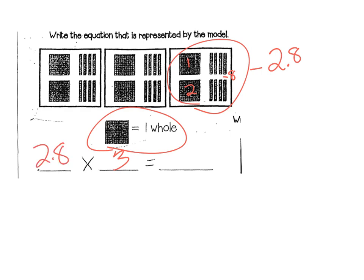I think it is safe to say that one of my pictures represents two and eight tenths. So I can write that as two and eight tenths times three. Now I'm going to get the blue and do some more labeling. Starting with the wholes — I see one, two, three, four, five, six wholes. Then I can count the tenths by fours: four, eight, twelve, sixteen, twenty, twenty-four. I've got twenty-four tenths.